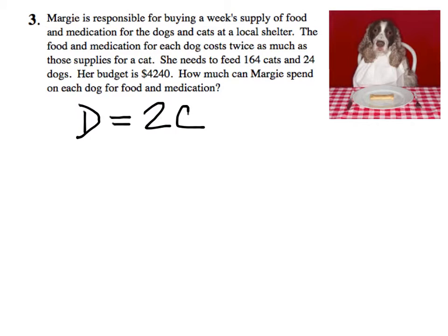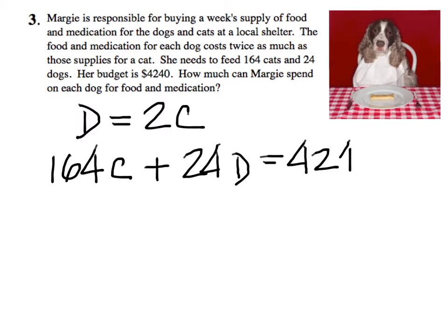She needs to feed 164 cats and 24 dogs. So if she feeds 164 cats and 24 dogs, if I multiplied the number of cats by the cost per cat and added that with 24 dogs times the cost per dog, then I'm going to come up with 4240.